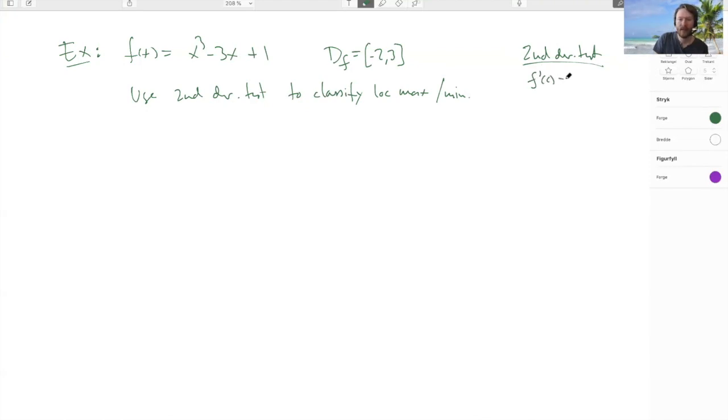If f'(c) = 0, then if f''(c) is positive, this implies that the function is doing something like this and you have a local minimum point.